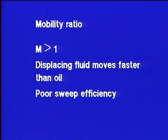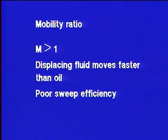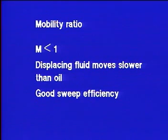When M is greater than 1, the displacing fluid — perhaps water or gas — moves faster than oil and will very likely bypass some of it, resulting in a low sweep efficiency. On the other hand, if M is less than 1, the oil is capable of moving faster than the displacing fluid, and we have good sweep efficiency.